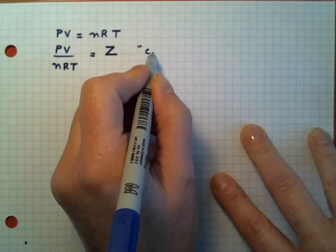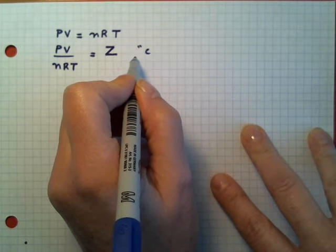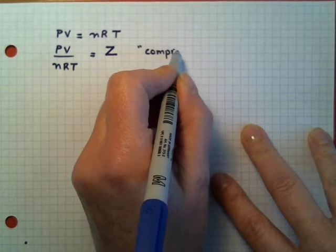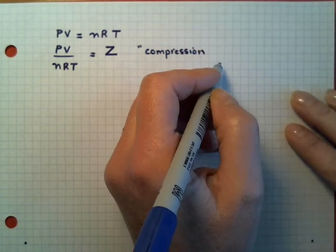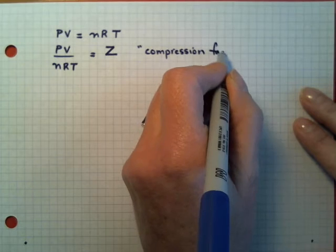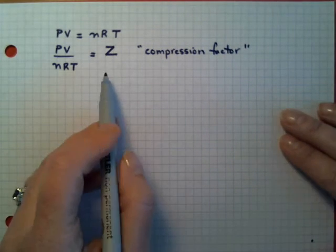And Z has a name. This is capital Z, not small Z which is collision frequency. This is the compression factor.